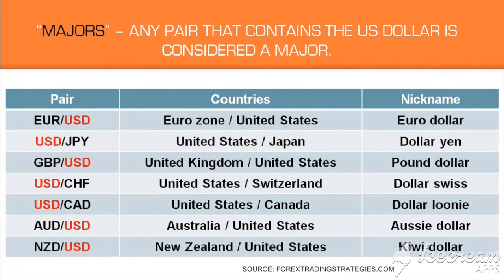I just mentioned some of the most common currency pairs. There are pairs called the majors. The majors are any currency pair that contains the U.S. dollar. So any pair paired with the U.S. dollar is considered a major. Looking at the chart, you've got the Euro-USD, the USD-JPY, GBP-USD, and so on — those are all majors.